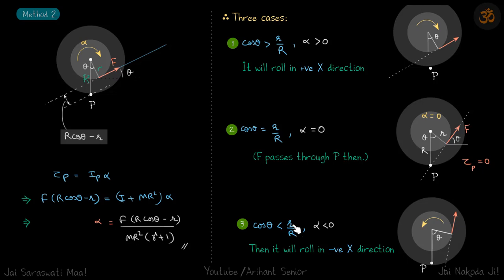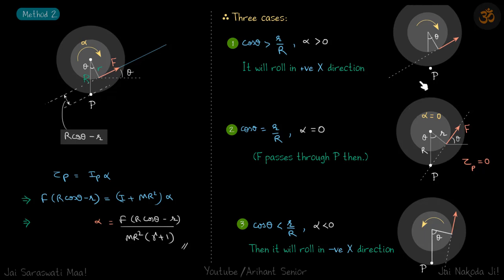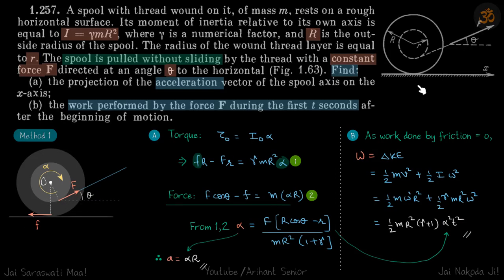Case 3: when cos(theta) is less than r/R, theta is large and the line of force passes to the right of point P. The force causes counterclockwise rotation and the whole spool moves towards the left. These three cases show how the angle theta determines which direction the spool will roll.